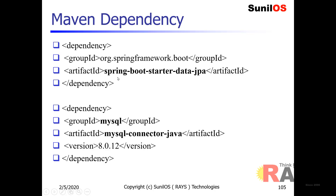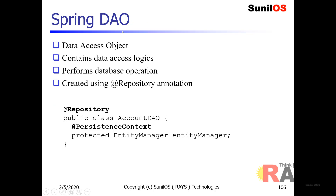In order to include dependent JARs, you can include Maven dependencies in pom.xml. spring-boot-starter-data-jpa is used to include JPA Hibernate libraries. And because I am using MySQL database, I need the MySQL connector Java database driver JARs, included using the MySQL Maven dependency.